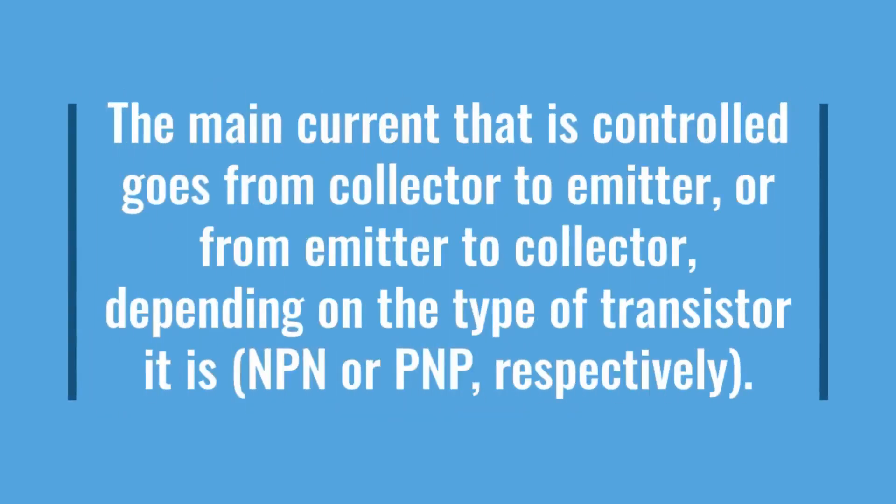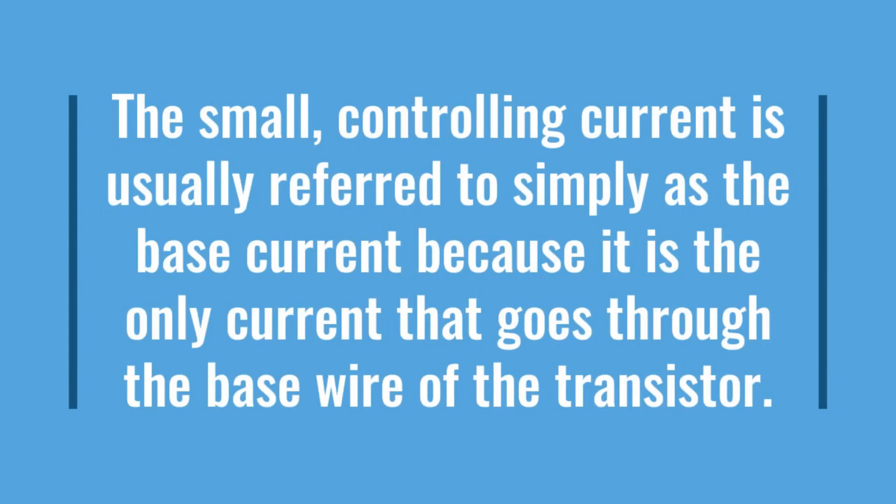The main current that is controlled goes from collector to emitter or from emitter to collector depending on the type of transistor, NPN or PNP respectively. The small current that controls the main current goes from base to emitter or from emitter to base, once again depending on the kind of transistor, NPN or PNP respectively.